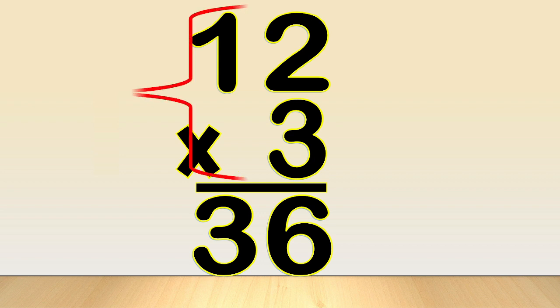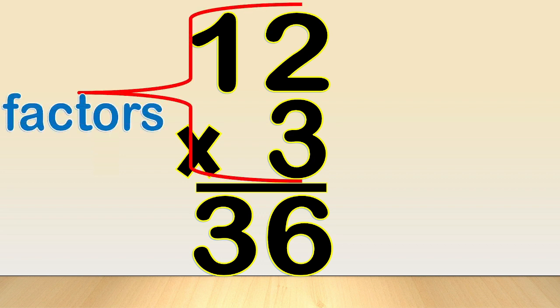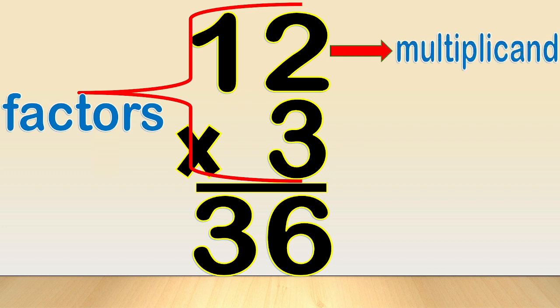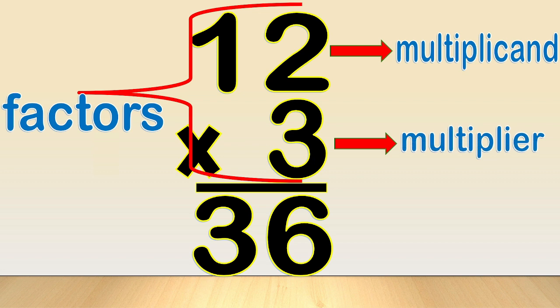The numbers that are multiplied are called factors. Normally, the bigger number is written on top and it's called the multiplicand. Below, we have the smaller number which is called the multiplier. And the answer is called the product.